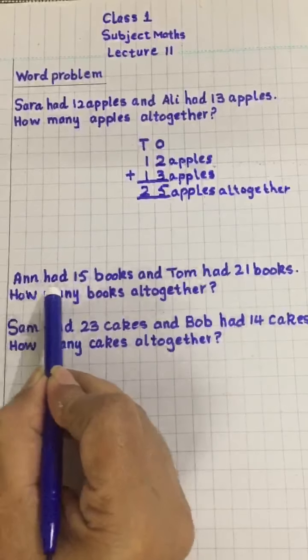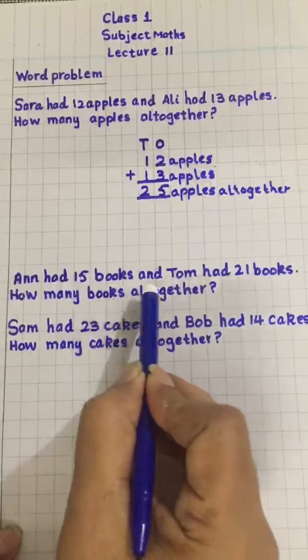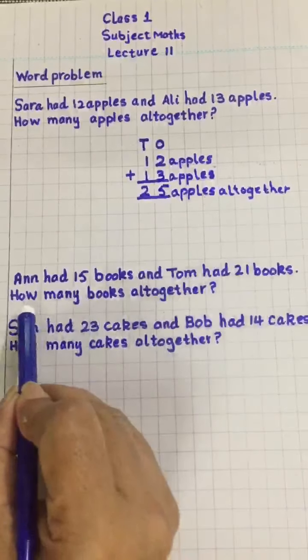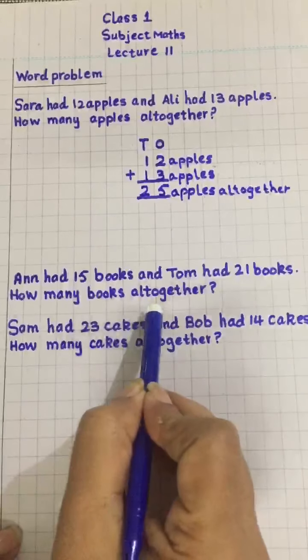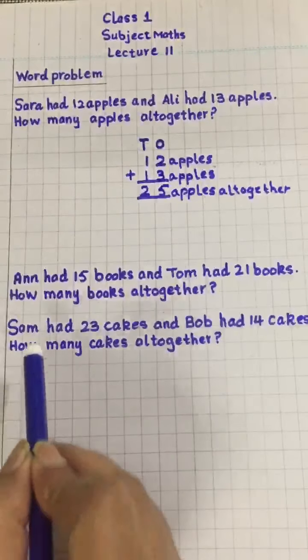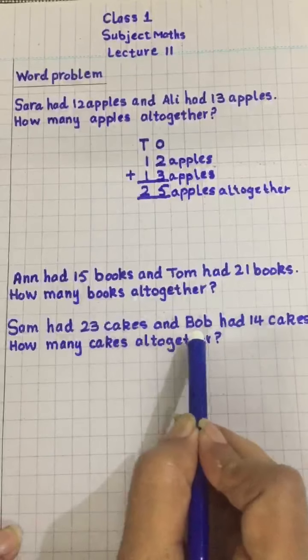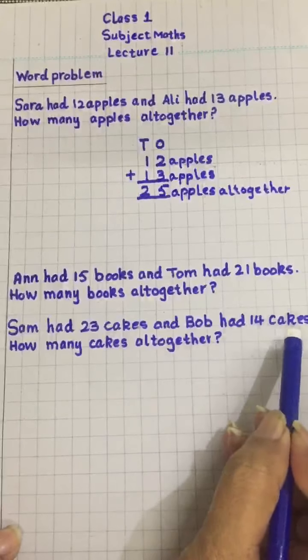Anne had 15 books and Tom had 21 books. How many books all together? Number 2. Sam had 23 cakes and Bob had 14 cakes. How many cakes all together?